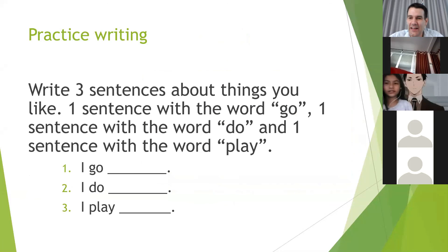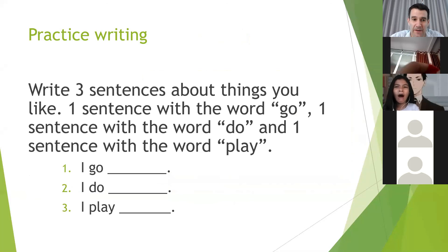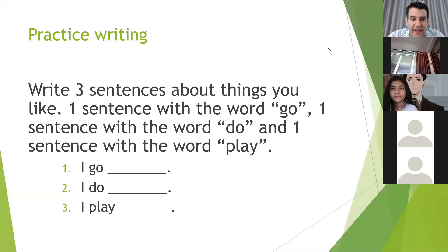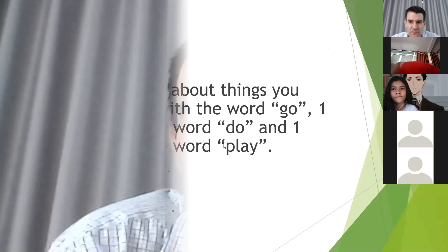So the last thing — you can do this now in the chat. Write three sentences: one sentence with the word 'go,' one sentence with 'do,' and one sentence with 'play' — about things you like to do, things that you do. You can write 'I go,' 'I play,' or 'I do' and fill in the blanks. If you did not finish in the chat, that is all the time for today, so you will write in your book three sentences and bring them when we come back to school.